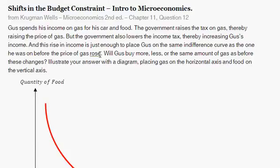So it's a Gus question. Gus spends his income on gas for his car and food. The government raises the tax on gas, thereby raising the price of gas. But the government also lowers the income tax, thereby increasing Gus's income.